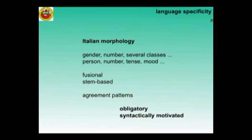Italian morphology is fusional and stem-based. There is no full word which is only the root; we always have a morpheme at the end. A single vowel may inform you about person, number, tense, mood, aspect, et cetera, in a verb — so it's quite complex. This rich morphology instantiates all-pervasive and obligatory agreement patterns, obligatory and syntactically motivated.